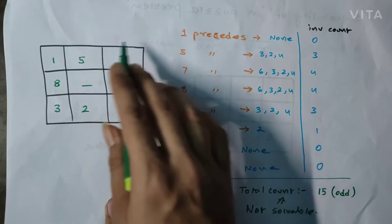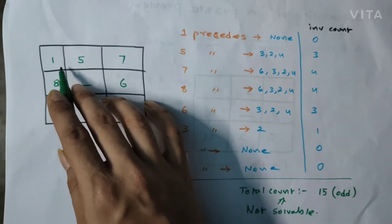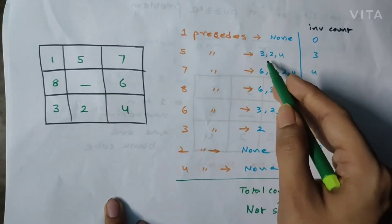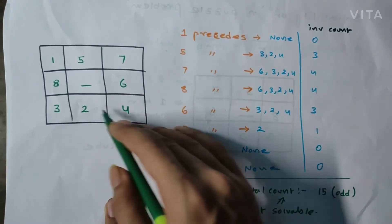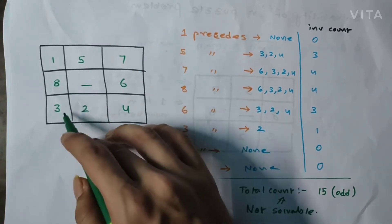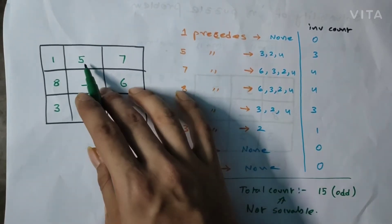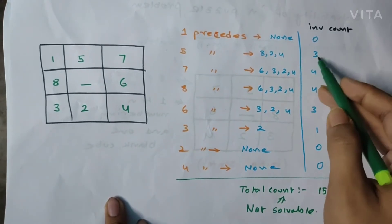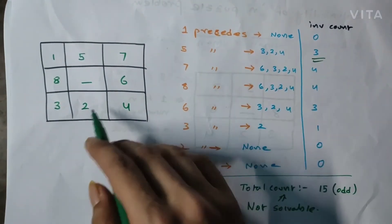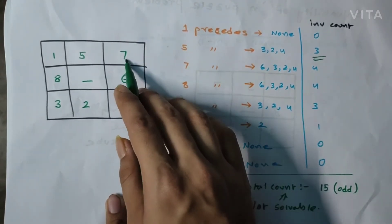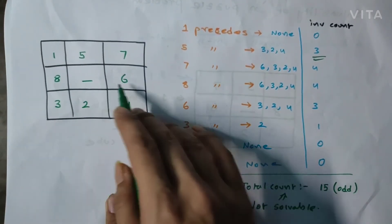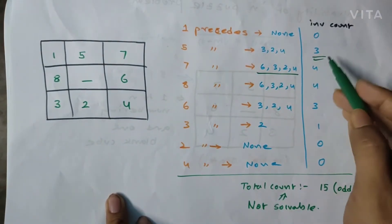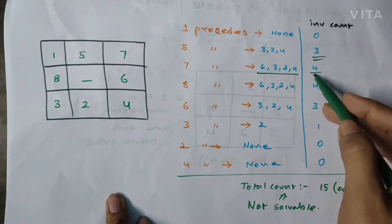For the number 1, it is not preceding any other values. For 5, it is actually preceding 3, 2, and 4 — because 5 is larger than those three values that come after it — so the inversion count for 5 is 3. For 7, it is preceding 6, 3, 2, and 4, so the inversion count is 4.